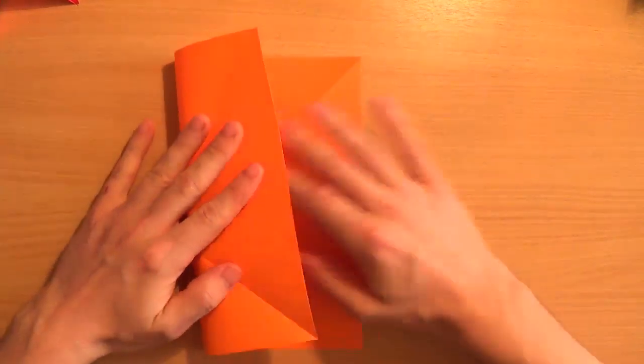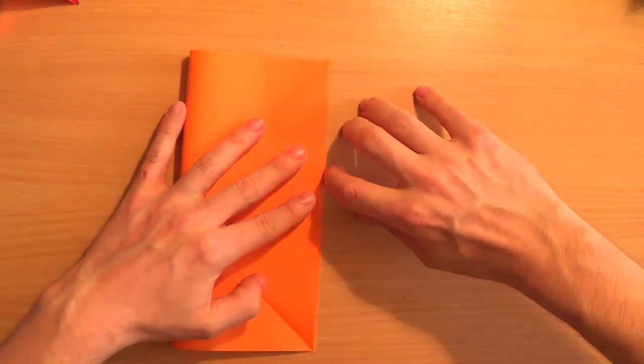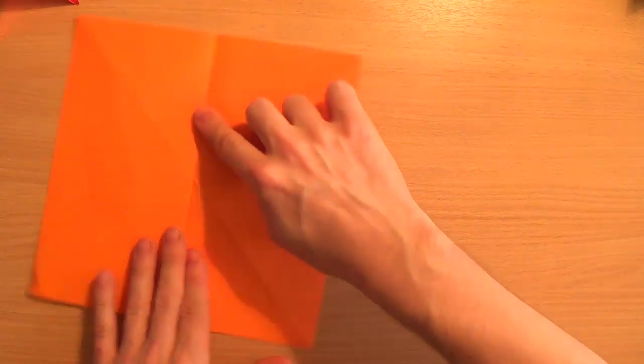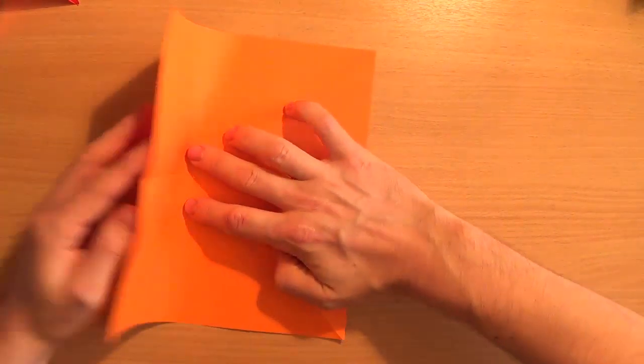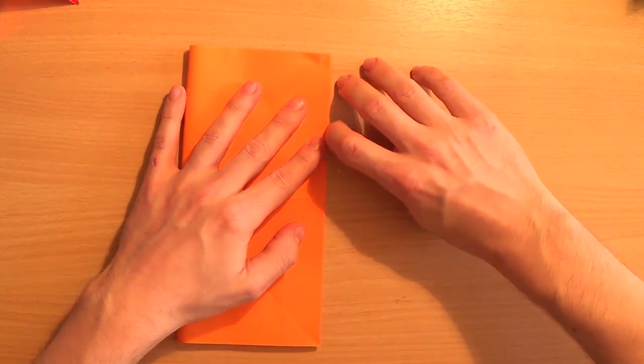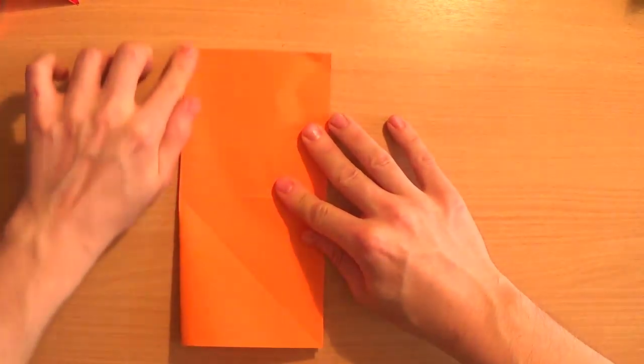And then we turn the whole thing over and we do the two straight folds. Like so. Open that out. Turn it 90 degrees and do your second straight fold. There we go.